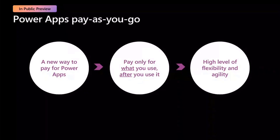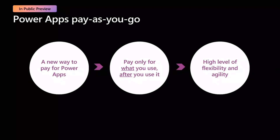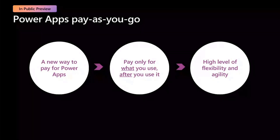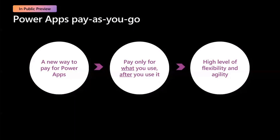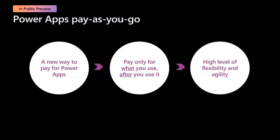Pay-as-you-go is a new model to complement the existing offerings in the market to pay for your premium Power Apps. Using pay-as-you-go, you only pay for what you use after you use it, and that provides a high level of flexibility. This is based on feedback from the community that it's hard to predict usage of a premium app and hard to convince your organization to adopt premium capabilities because of the licensing cost and commitment. So we introduced this new way to pay via Azure subscription for your actual usage after you've used the premium capabilities and derived value, instead of pre-committing.